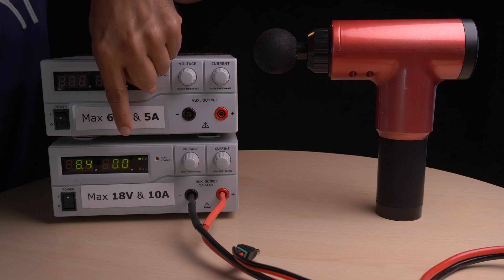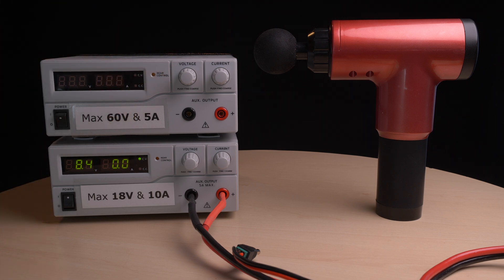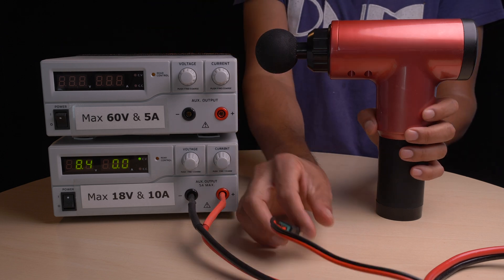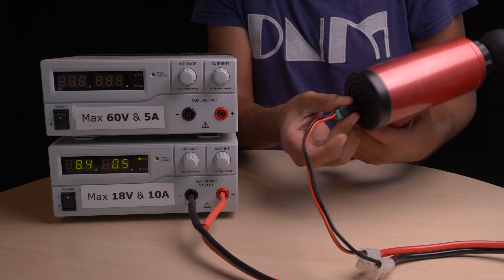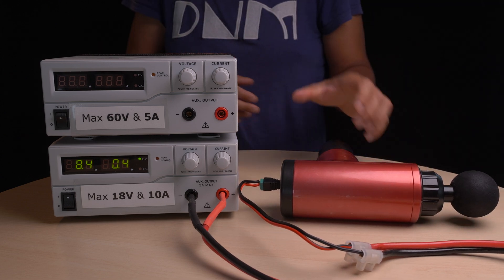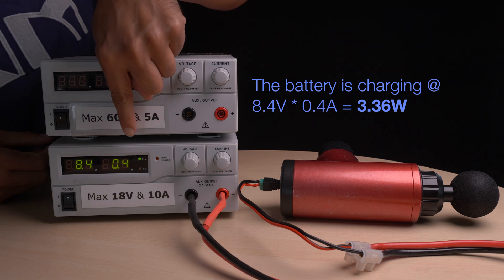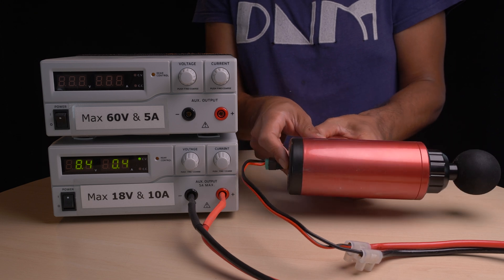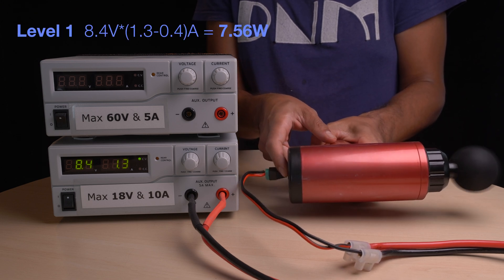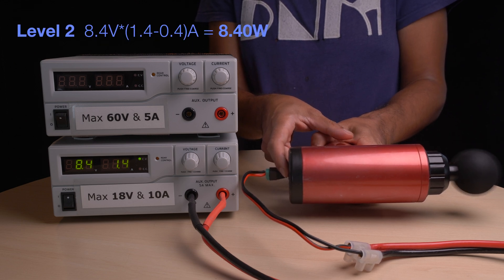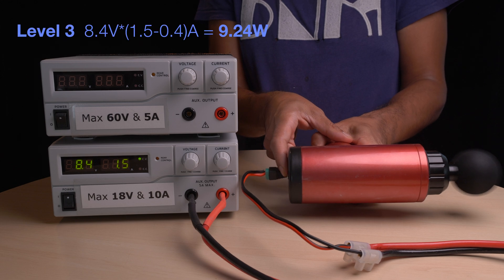This power supply is set on 8.4 volts. It can deliver 10 amperes, but it's delivering 0 at the moment, because nothing is connected. Now the power supply is connected to the massage gun, and it's charging it with 0.4 ampere. Times 8.4 volts is 3.36 watts. This now is how to calculate the power use on all six levels, excluding the 0.4 ampere that goes to charging.